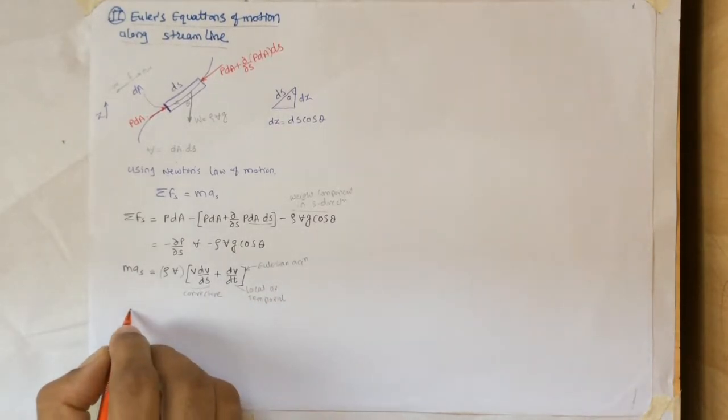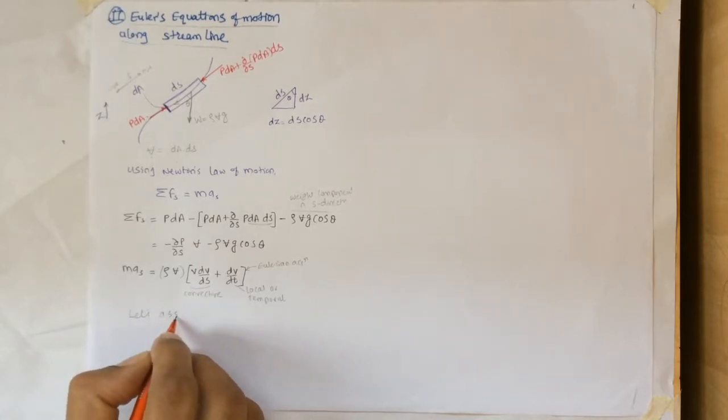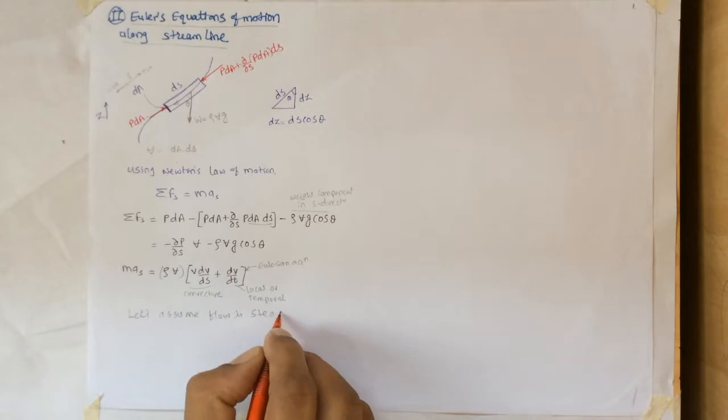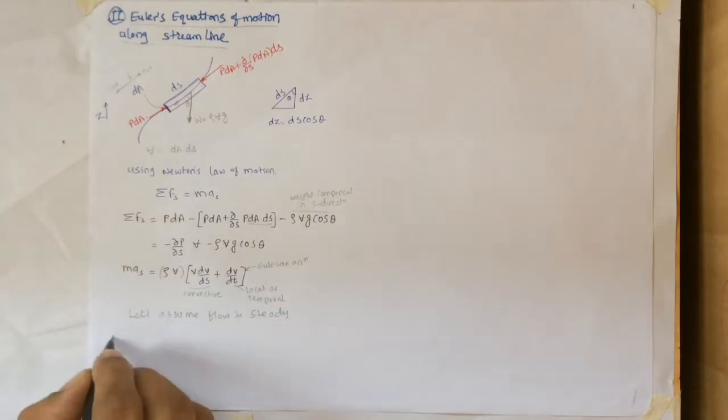If we assume flow to be steady, that is independent of time, does not depend on time, so this dV/dt term in acceleration will be zero. We get ma equals to rho volume times v dV/ds.